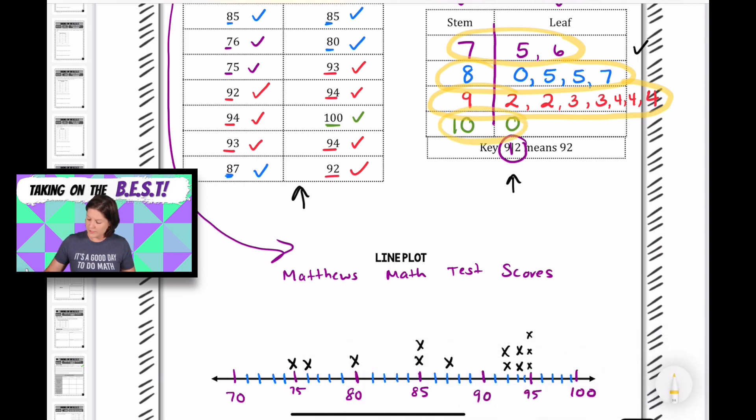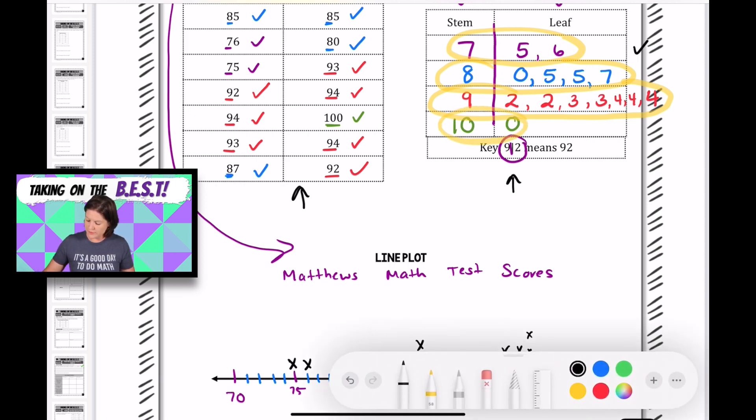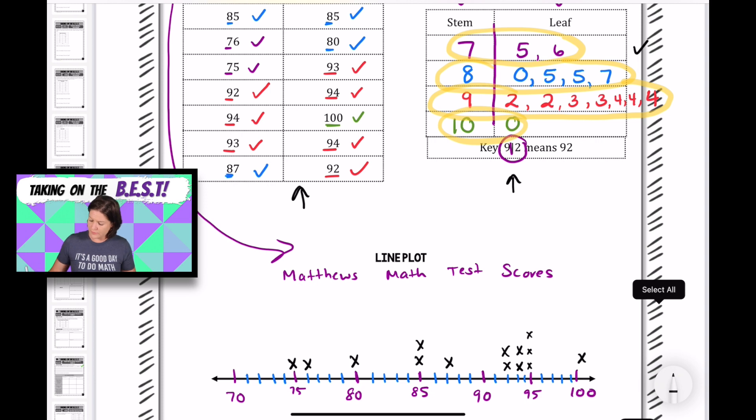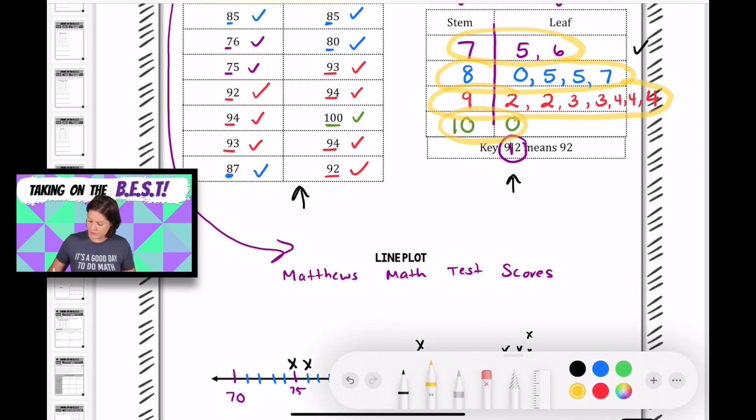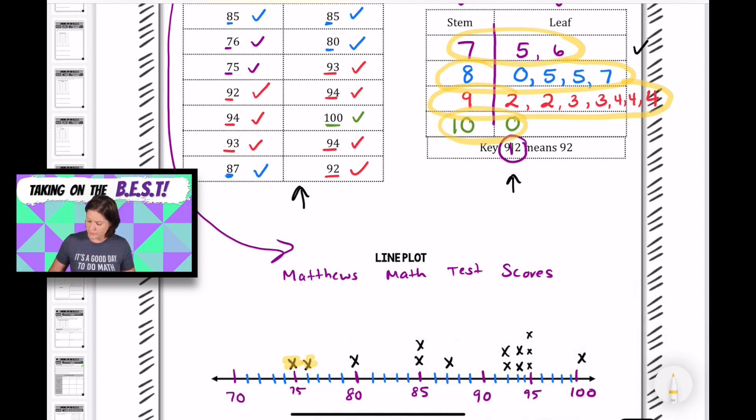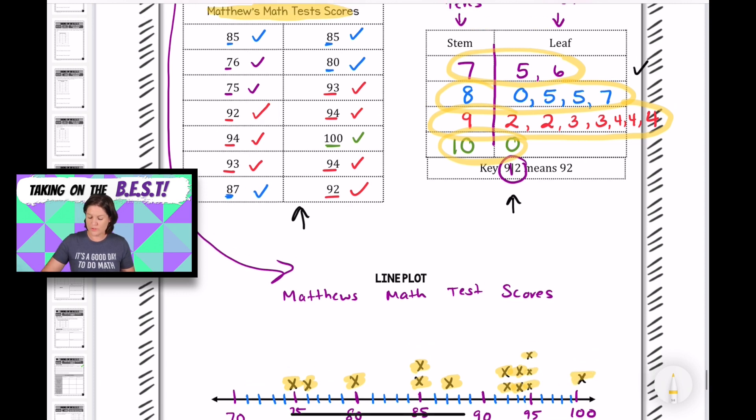And then, of course, the last one is 100. So just go over to your 100 and check that out. And just to make sure, we have 1, 2, 3, 4, 5, 6, 7, 8, 9, 10, 11, 12, 13, 14 test scores, which is what we counted up over here too.